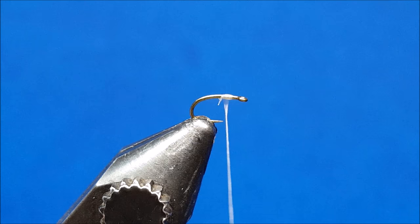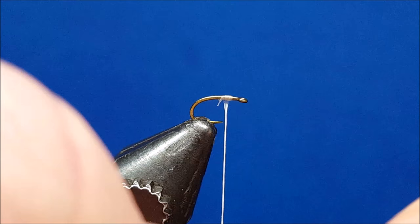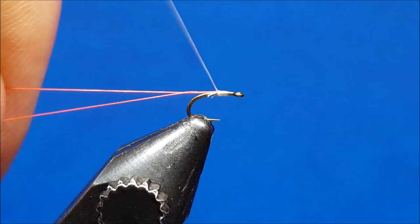I'm then going to bring in the neon orange 70 denier. I'm going to pull it over the thread, fold it over, and as I lift the white thread, I'm going to slide this down on the opposite side of the hook shank.